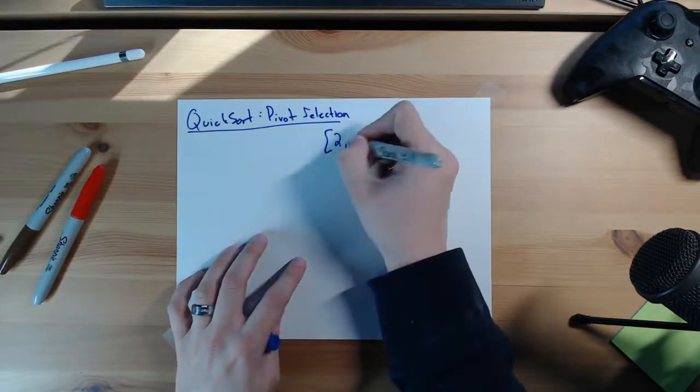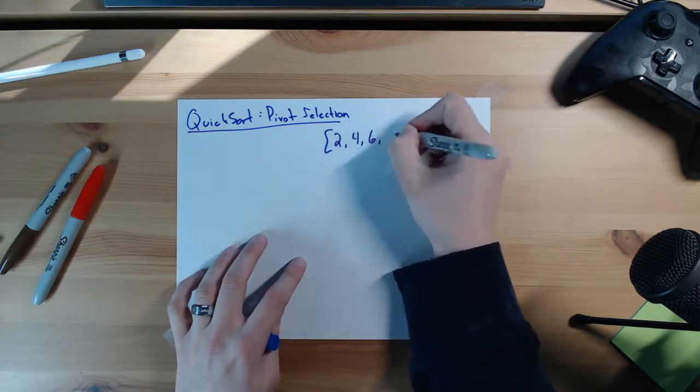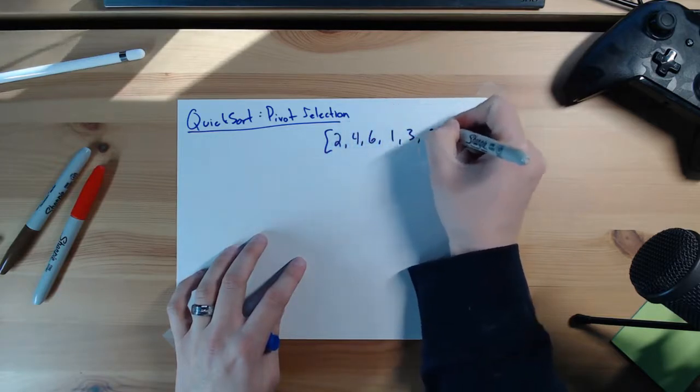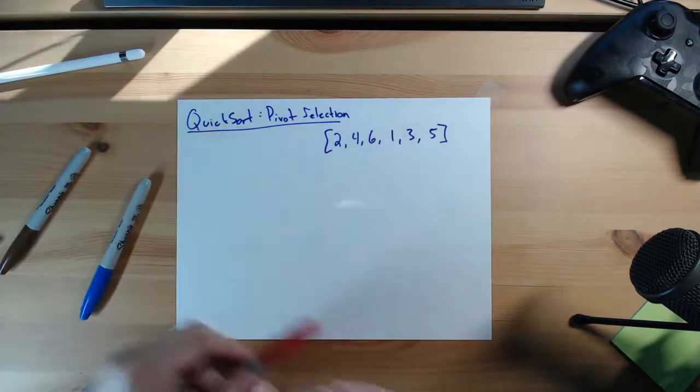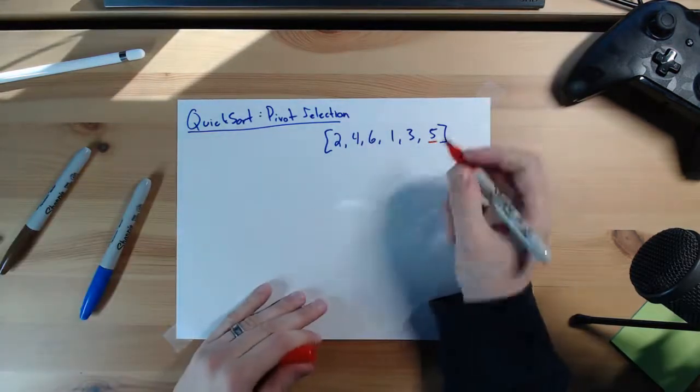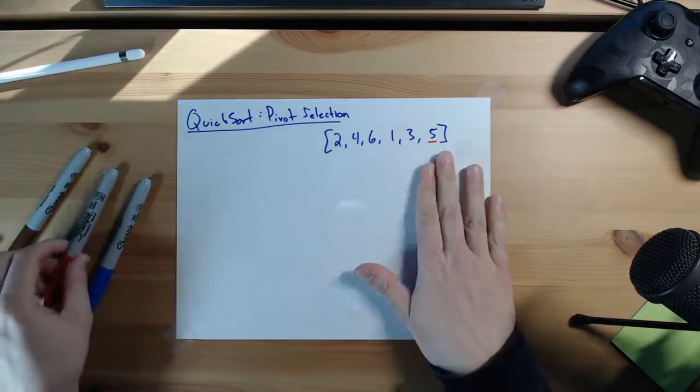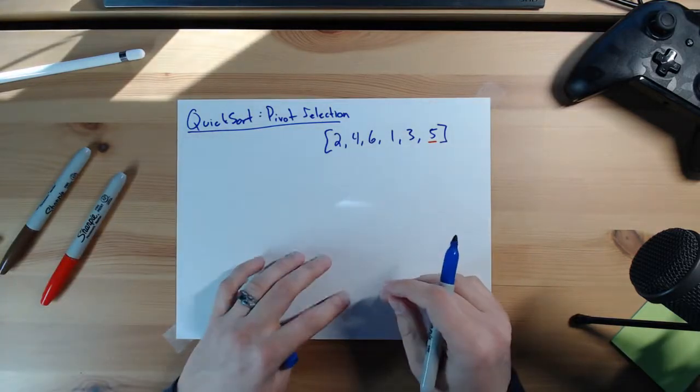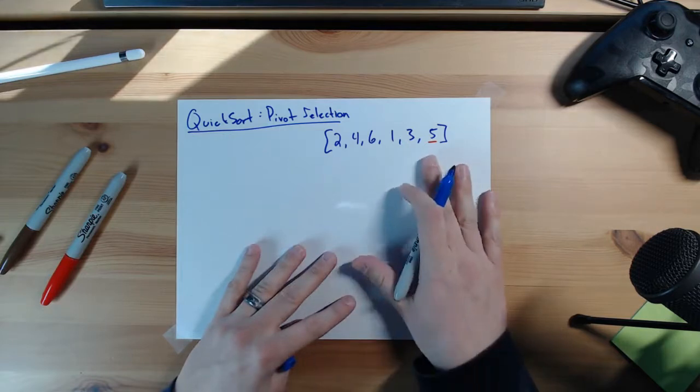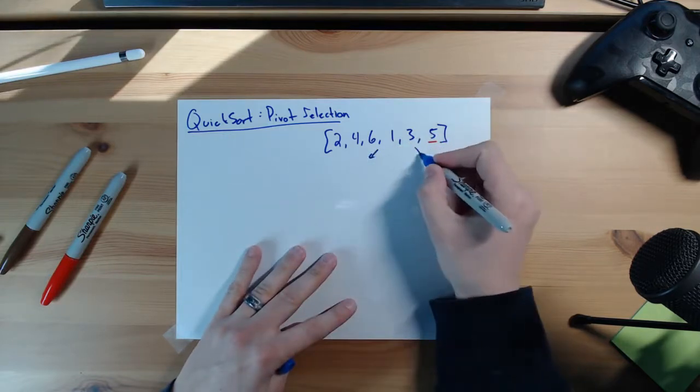So if we look at the example 2, 4, 6, 1, 3, 5. We could pick the last element as our pivot here. And if we were to pick the last element as our pivot here, which is probably one of the most common implementations of quicksort, we're going to end up splitting this into two different arrays.